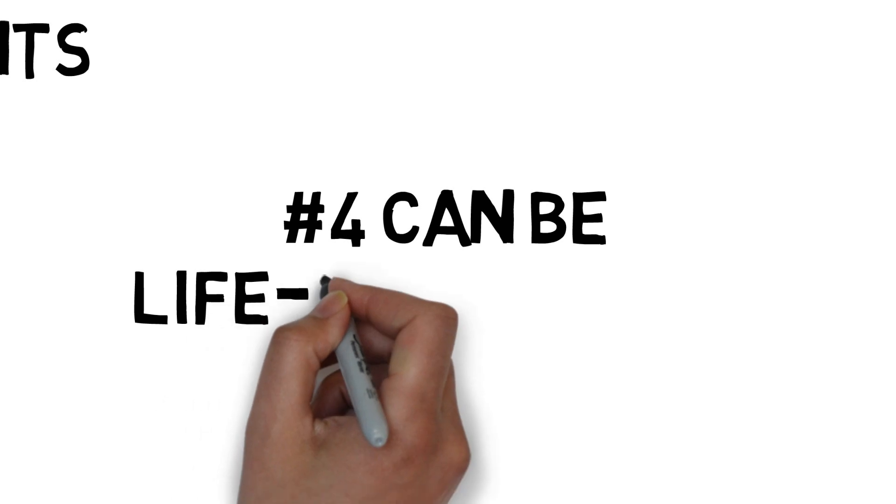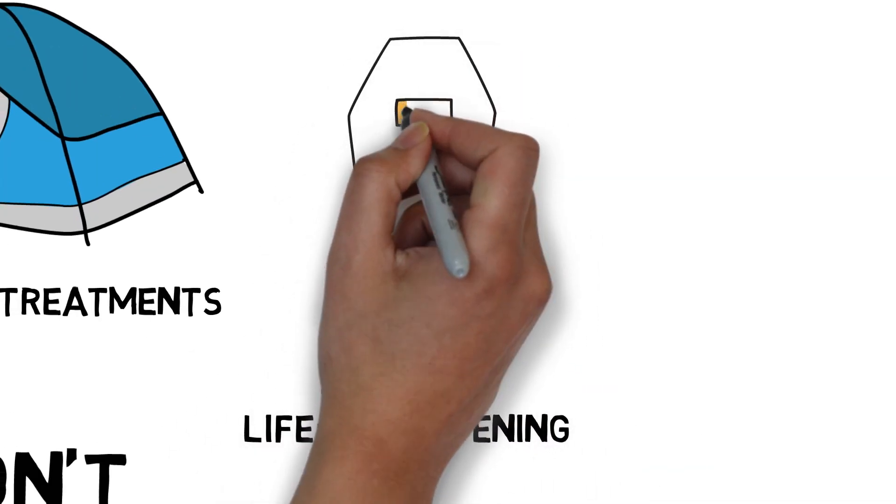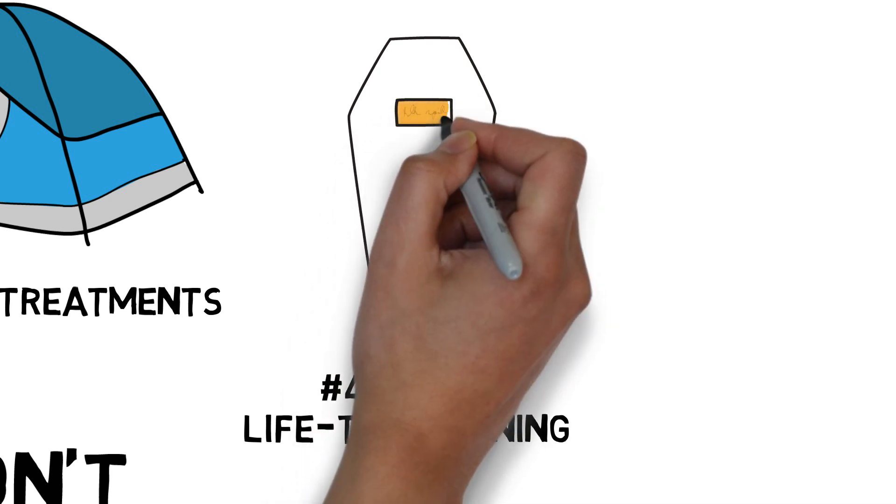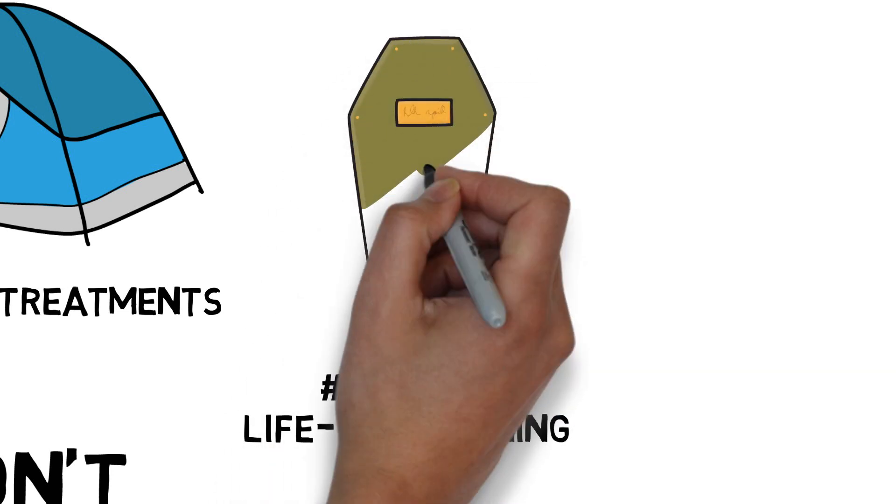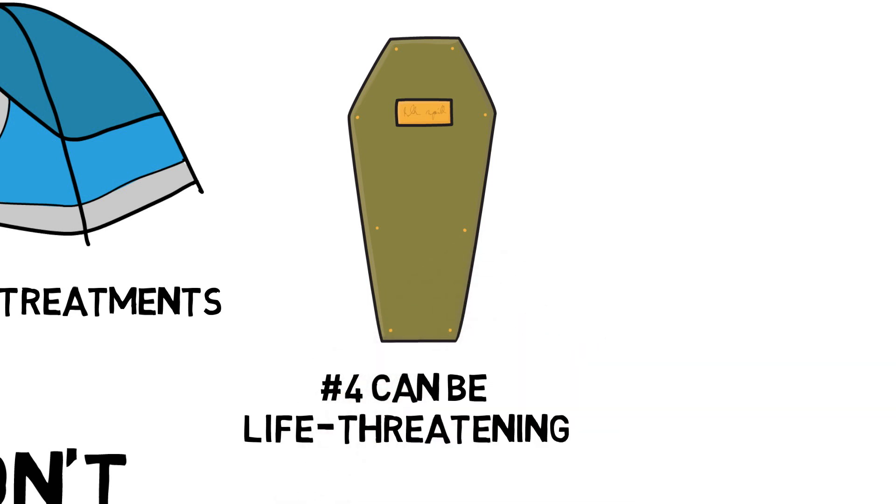Number 4. Cystic fibrosis can be life-threatening. In fact, in the mid-1990s, most patients didn't live past 10 years old. Nowadays, treatments for cystic fibrosis are advanced enough to allow most patients to live into their 30s at least, with some even living past 50. However, most people who have cystic fibrosis will die prematurely from complications.